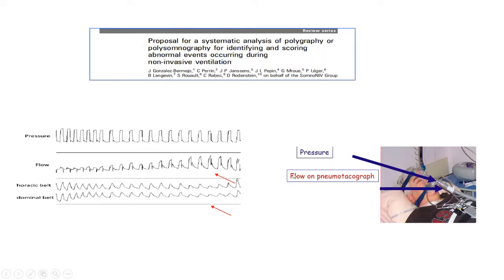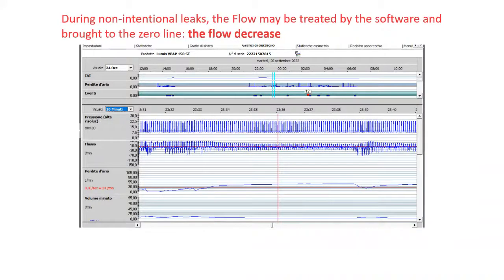This view is from an external pneumotach close to the interface. What we see in software is treated data — all software treat data coming from the flow sensor. You have to know how to use the information coming from the software. For example, the majority of software bring the flow close to the zero line every time flow increases due to leaks.